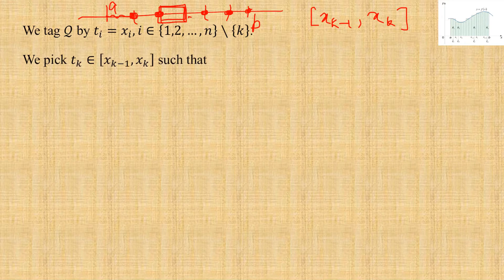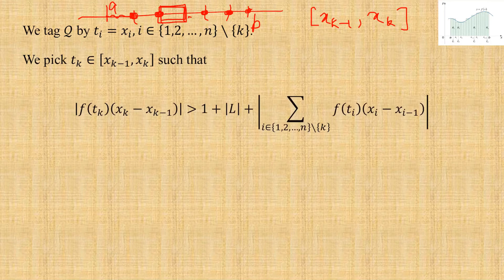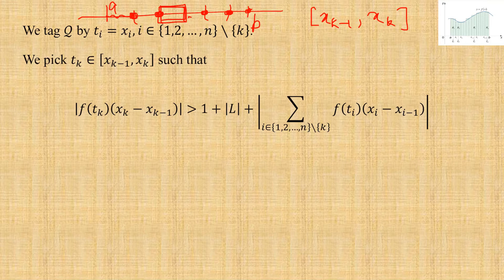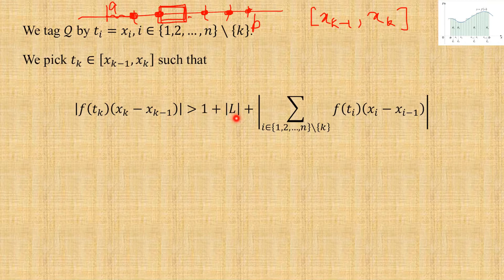We pick t_k from [x_{k−1}, x_k] such that |f(t_k)| · (x_k − x_{k−1}) is very large — specifically greater than 1 + |L| + |Σ_{i≠k} f(tᵢ)(xᵢ − xᵢ₋₁)|. Since the function is unbounded on sub-interval [x_{k−1}, x_k], the absolute value of f(t_k) on that sub-interval can be made arbitrarily large.